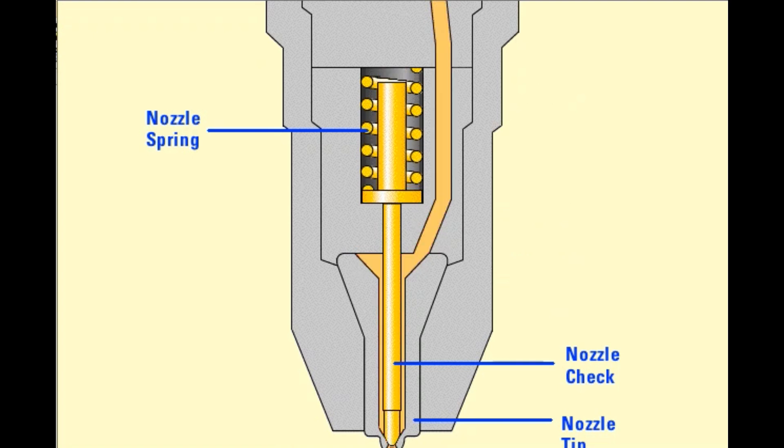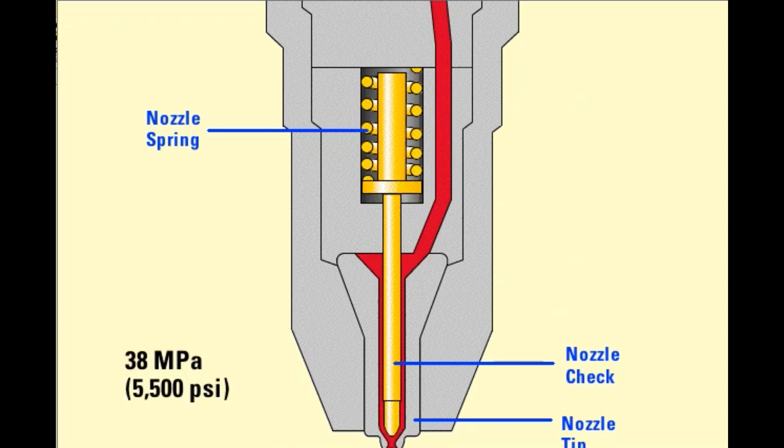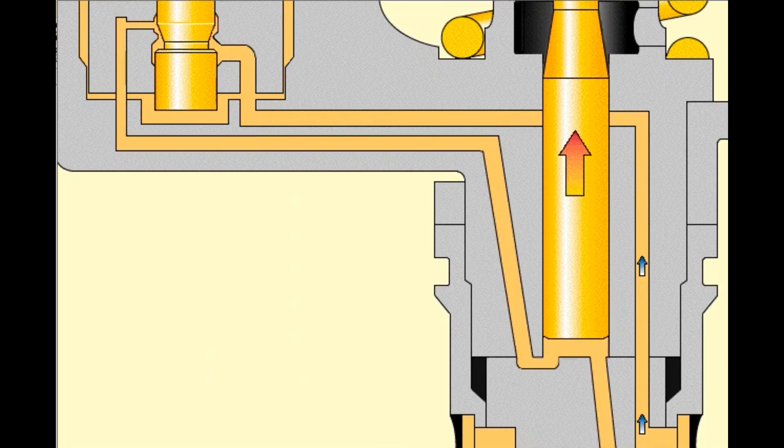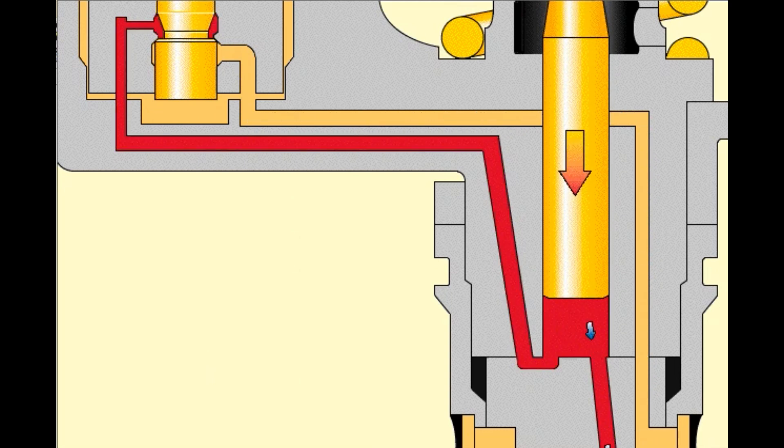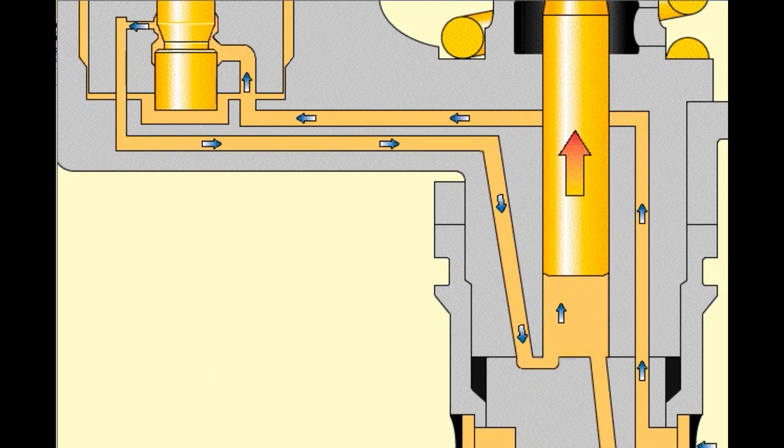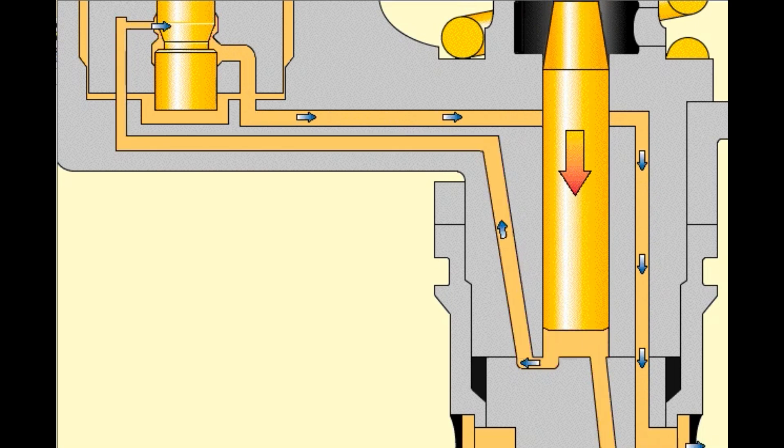However, to flow out of the tip, the injection pressure must reach about 38 megapascals or 5,500 psi in order to raise the nozzle check against the force of the nozzle spring. The fuel chooses the path of least resistance. It flows around the normally open poppet in the cartridge valve assembly to the fuel supply passage in the cylinder head.